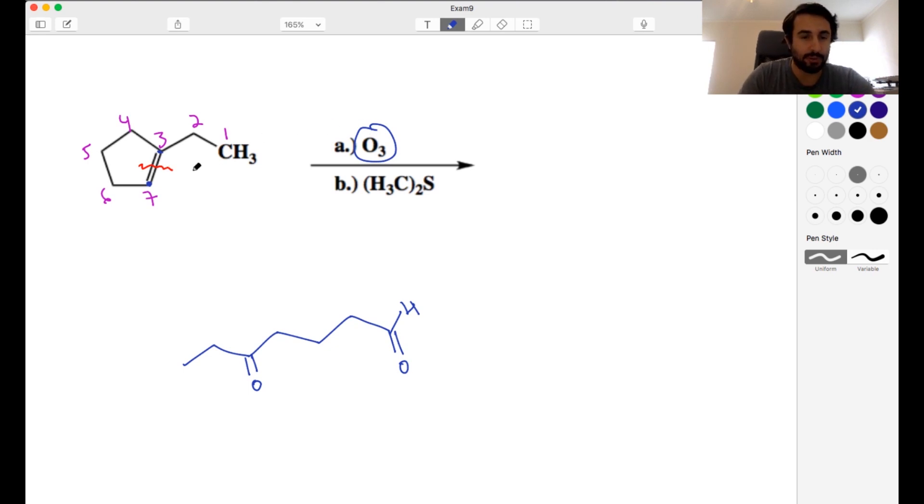So ozonolysis, we cleave this pi bond, pull this apart into a linear molecule, and then we've got to have two carbonyls. One is ketone, one is an aldehyde. So there's our ozonolysis.